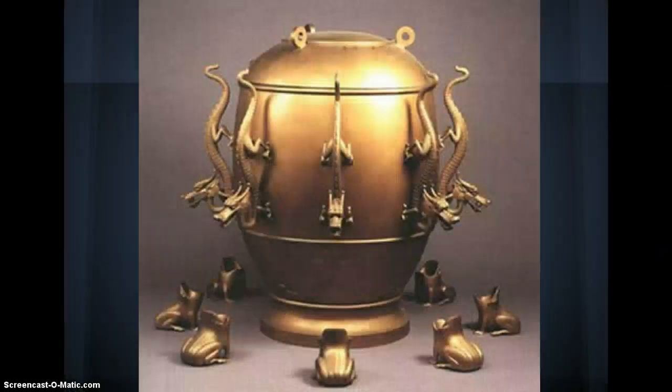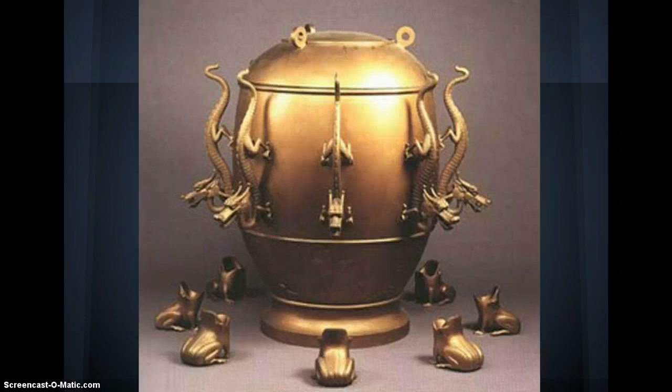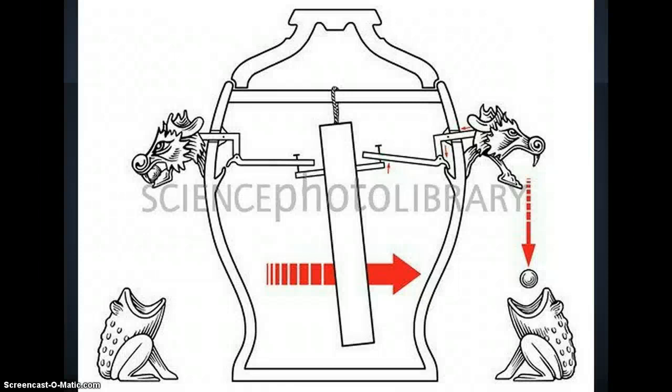The earliest recorded device to record earthquakes was in 132 AD by Zhang Heng. His seismoscope showed the direction the earthquakes were coming from. It was a cylinder with dragon heads on all sides. When an earthquake occurred, the seismograph would knock a ball out of the dragon opposite side's mouth, which landed in a small bowl. This shows the direction of the earthquake.